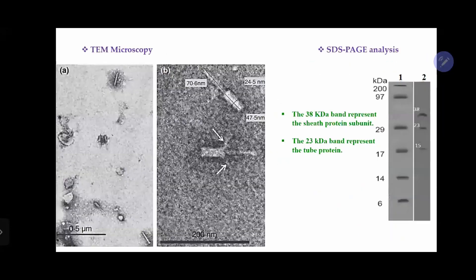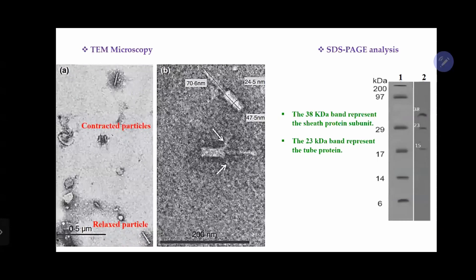When we examined the R-pyocin using transmission electron microscopy, we found some contracted particles and relaxed particles. In picture number B, there are dimensions of a contracted R-pyocin particle. When we applied the SDS-PAGE analysis for the purified R-pyocin, we found a 38-kilodalton protein band representing the sheath protein subunit, and also a 23-kilodalton band representing the tube protein.